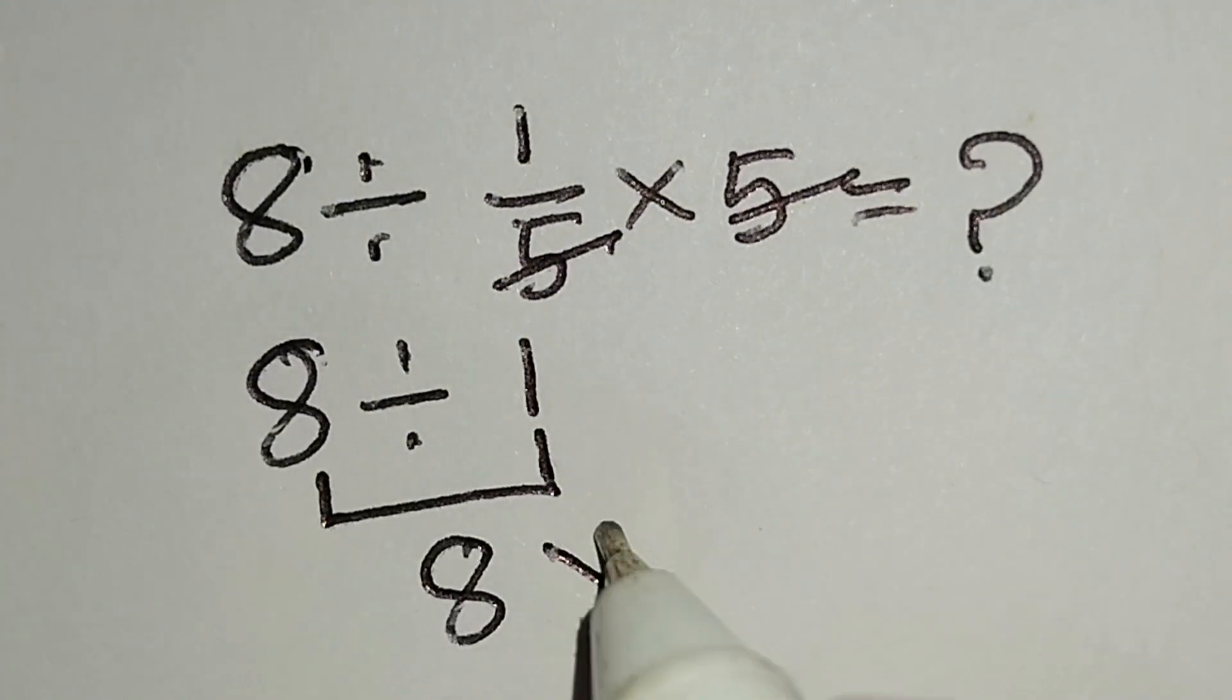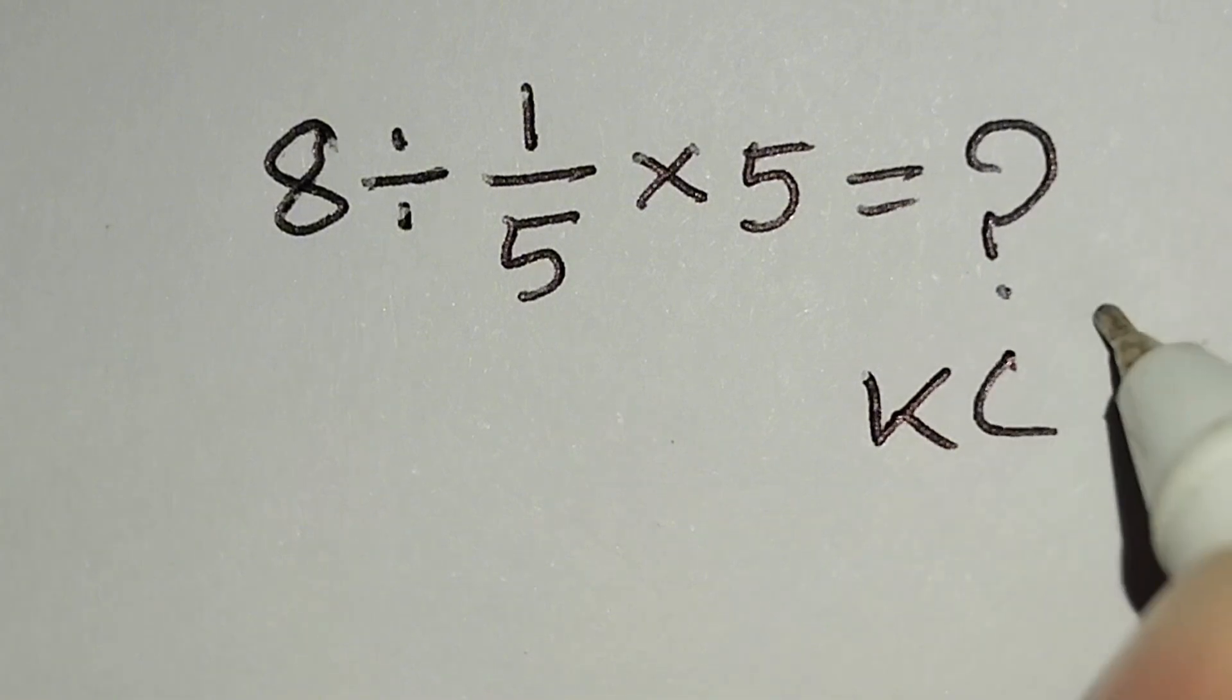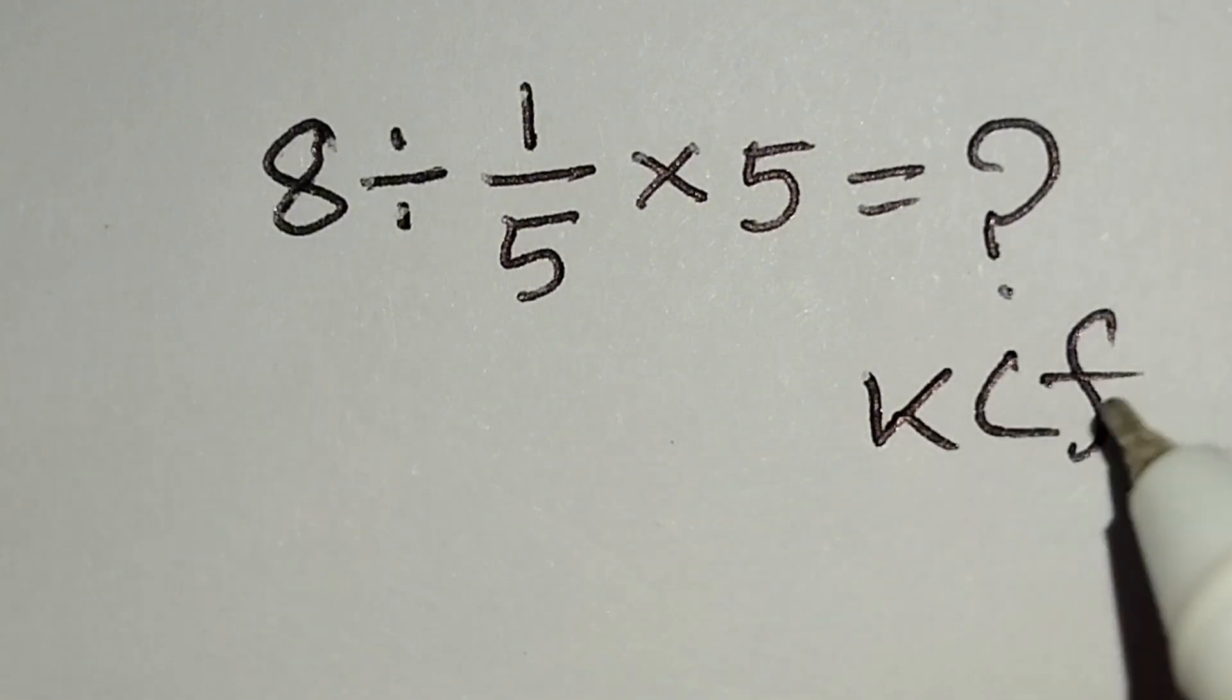But this answer is not correct. Now I will apply the KCF rule to solve this math correctly. Here KCF: K for keep, C for change, F for flip.